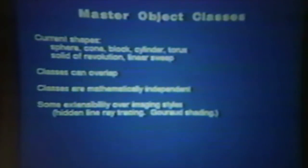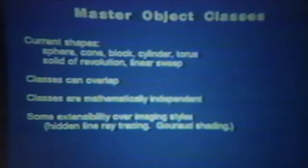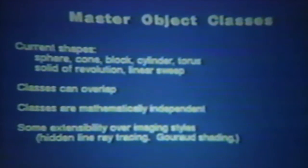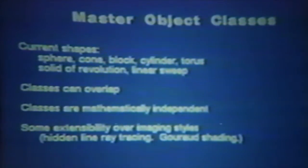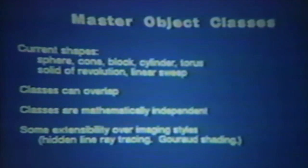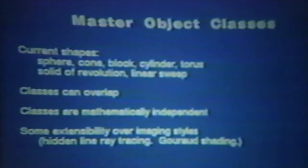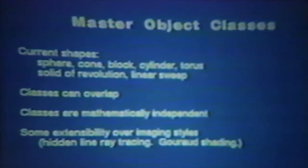I wanted to talk about what you would have to go through to add a new imaging style to the system. Each master object class has to know something about wireframes, shaded approximations, and ray tracing. It's quite possible that adding a new imaging style would require adding a new procedure to the shape class interface and then implementing it for all the shapes already there. However, it is to be hoped that you could come up with a powerful enough set of primitives so that many new imaging styles could be implemented on top of the procedures already there.